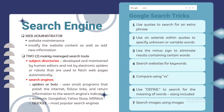Then we have what we call the search engine. The function of a search engine is for you to find information on the internet. How it works: alternatively, we have Google, Yahoo, MSN, and MSN Bot. Those are what we call search engines.